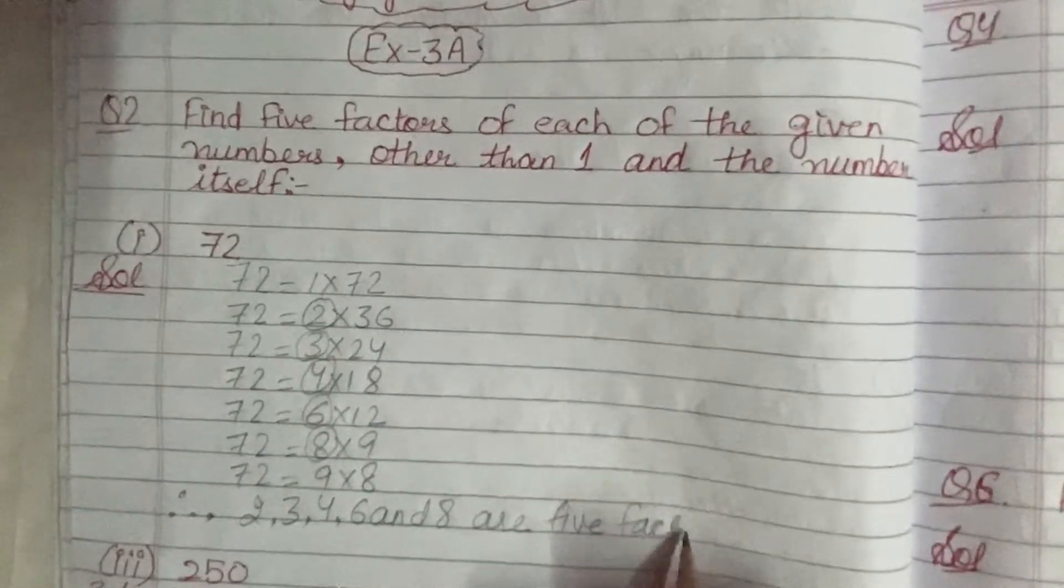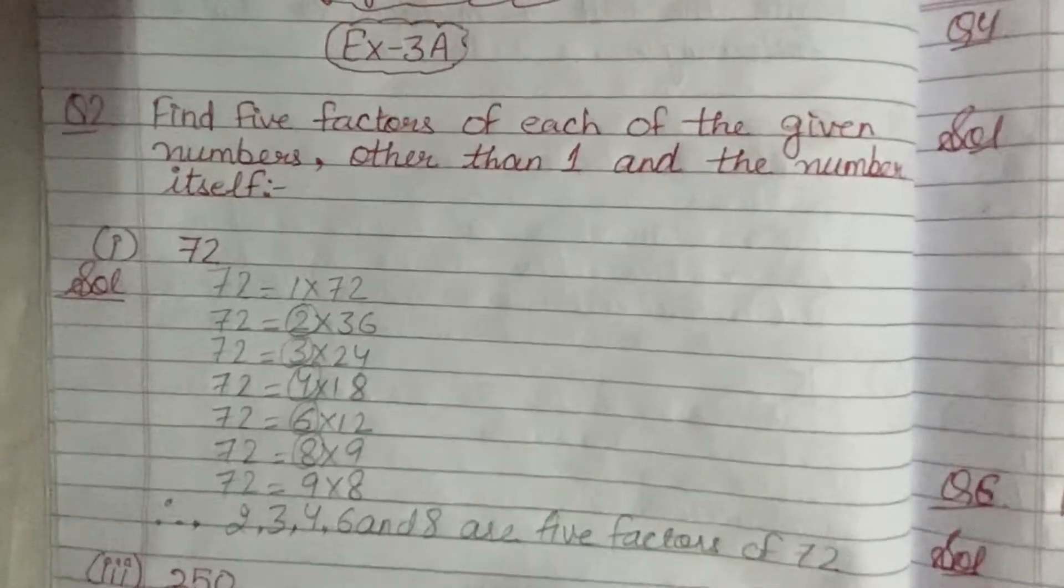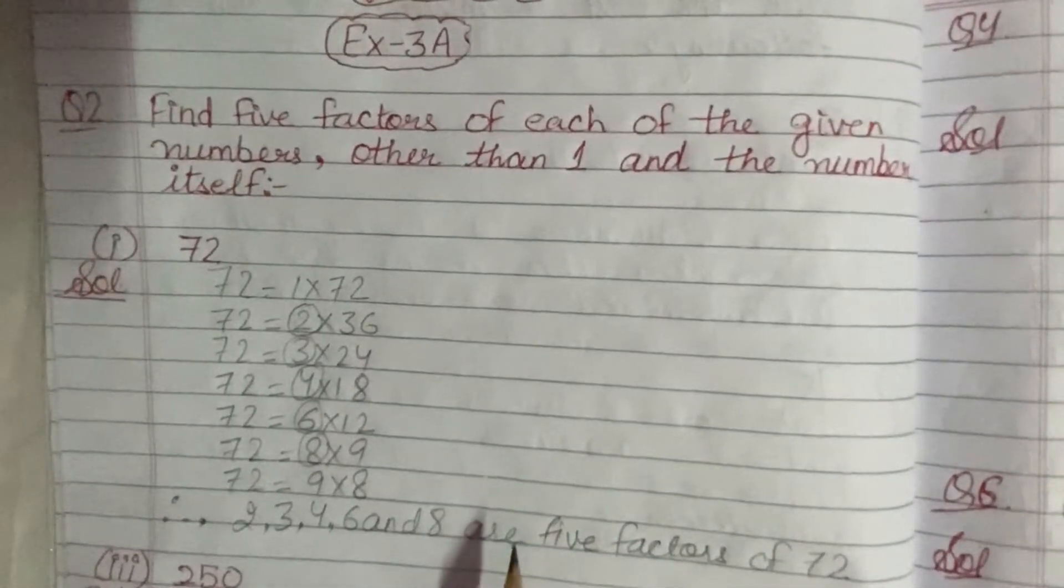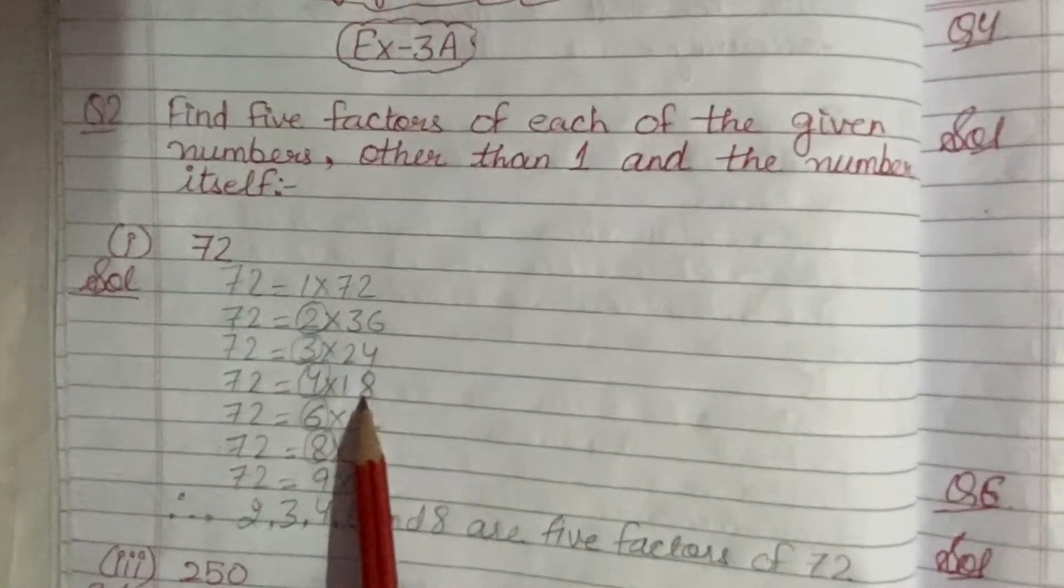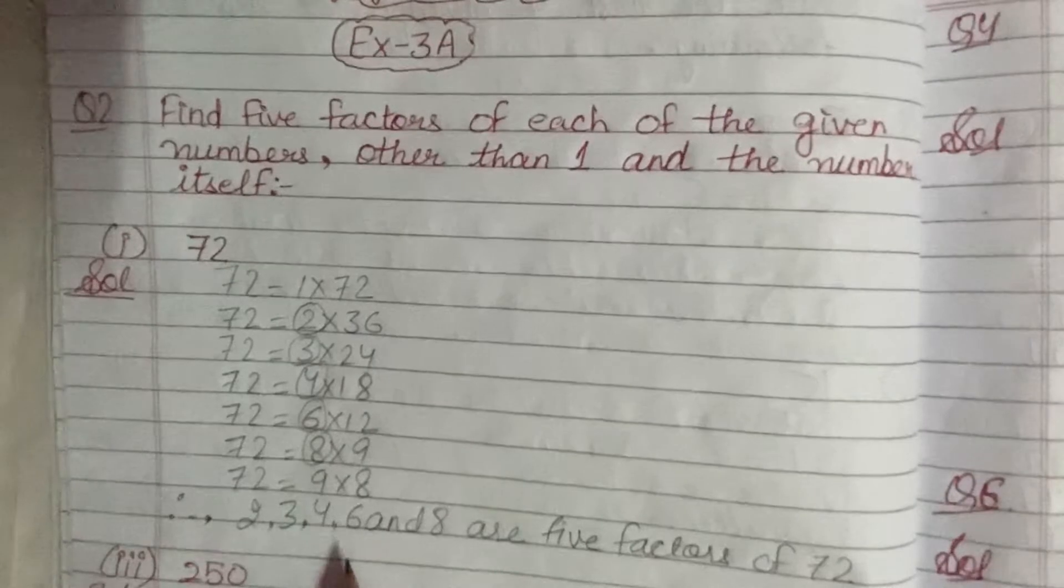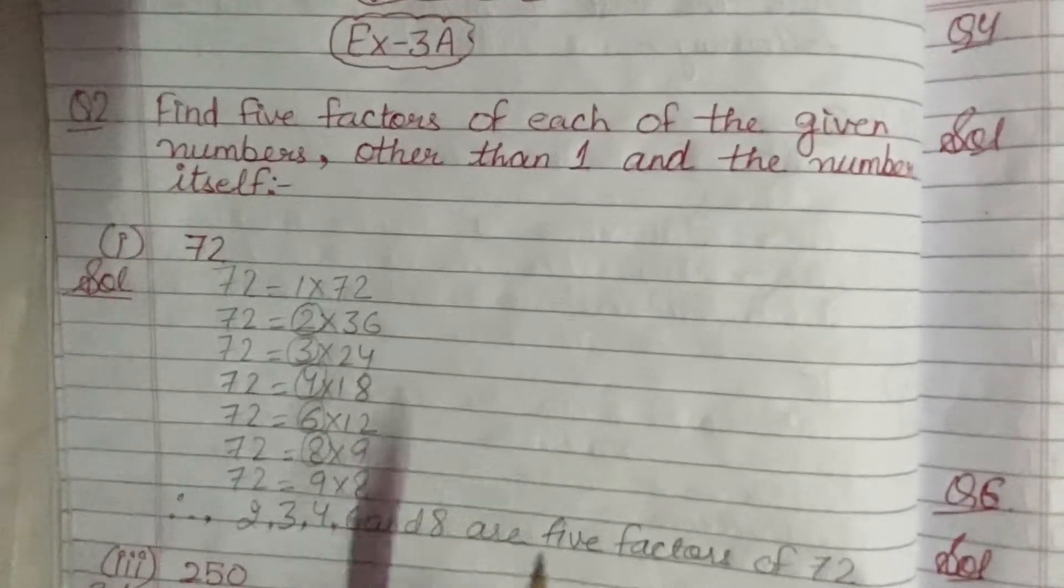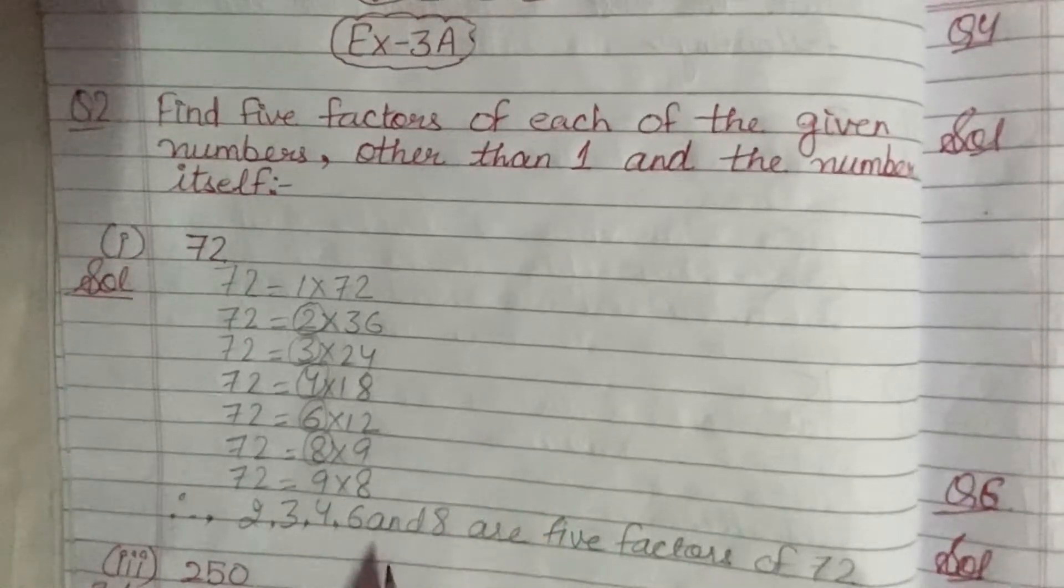So 2, 3, 4, 6, and 8 are 5 factors of 72 other than 1 and the number itself. If you want, you can write 9, 12, 18, 24, 36 also. Any 5 factors other than 1 and the number itself. So I hope the first part is clear to you.